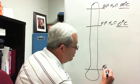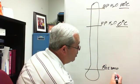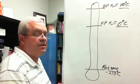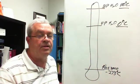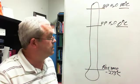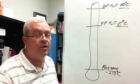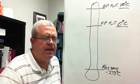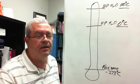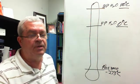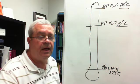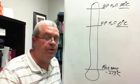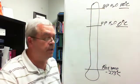Absolute zero is way down about minus 273 degrees Celsius, which in Fahrenheit is about minus 460 — somewhere in there. It's cold. It's real cold. Now you might ask: has anybody really gotten things down to absolute zero? Well, that's a record that different labs set every now and then. I think the closest now is like 13 trillionths of a degree above absolute zero. That's pretty close.